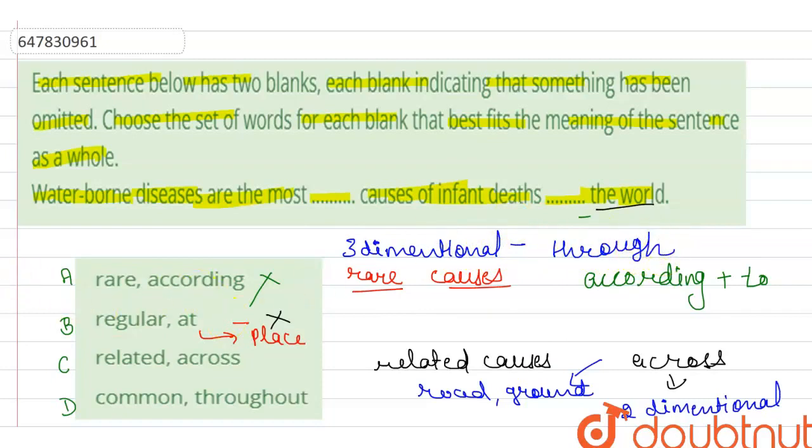We have left option D. Option D will be the correct answer. Let's check it out once again. First, let's see what is common in first blank. Waterborne diseases are the most common causes of infant's death, completely suits. Most common causes of infant's death throughout the world. So option D will be the correct answer.